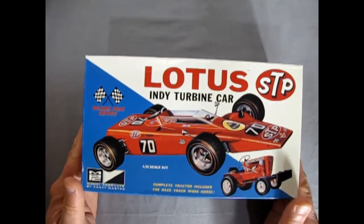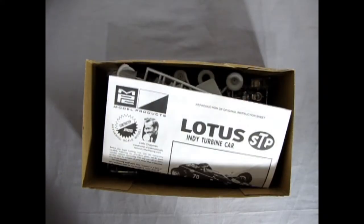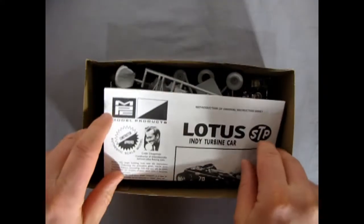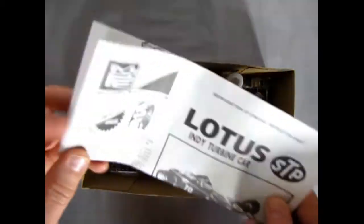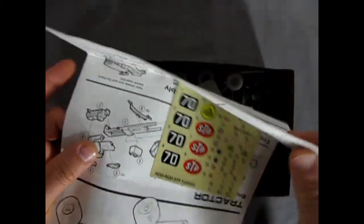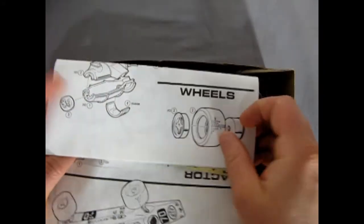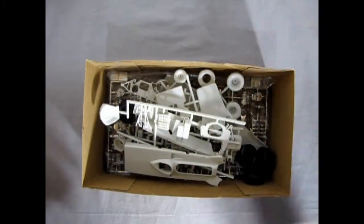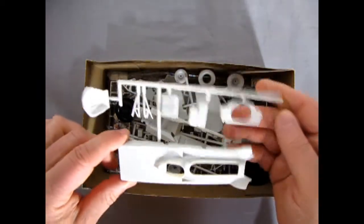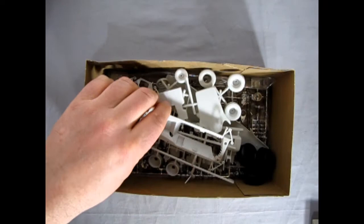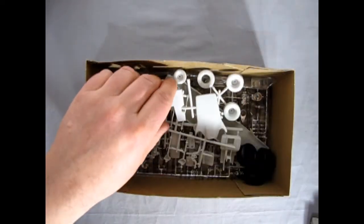So now, let's just take the lid off and see what's underneath. And here, of course, we have our instruction sheet. Inside the instruction sheet, we have the decals. Let me just move that out of the way.